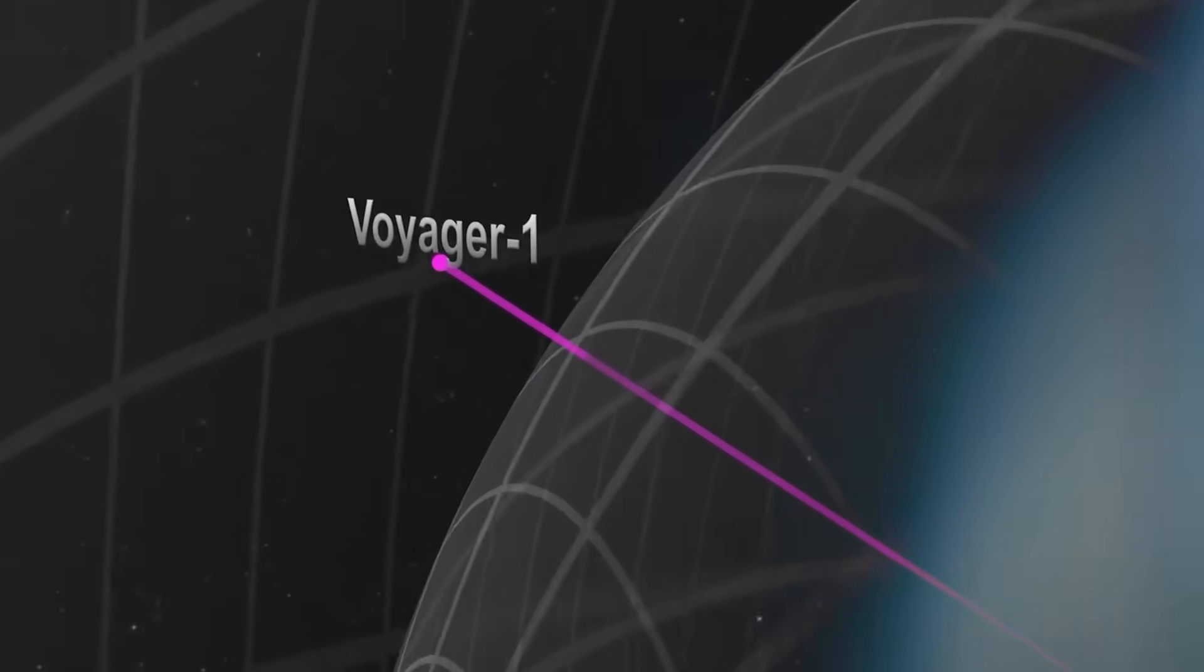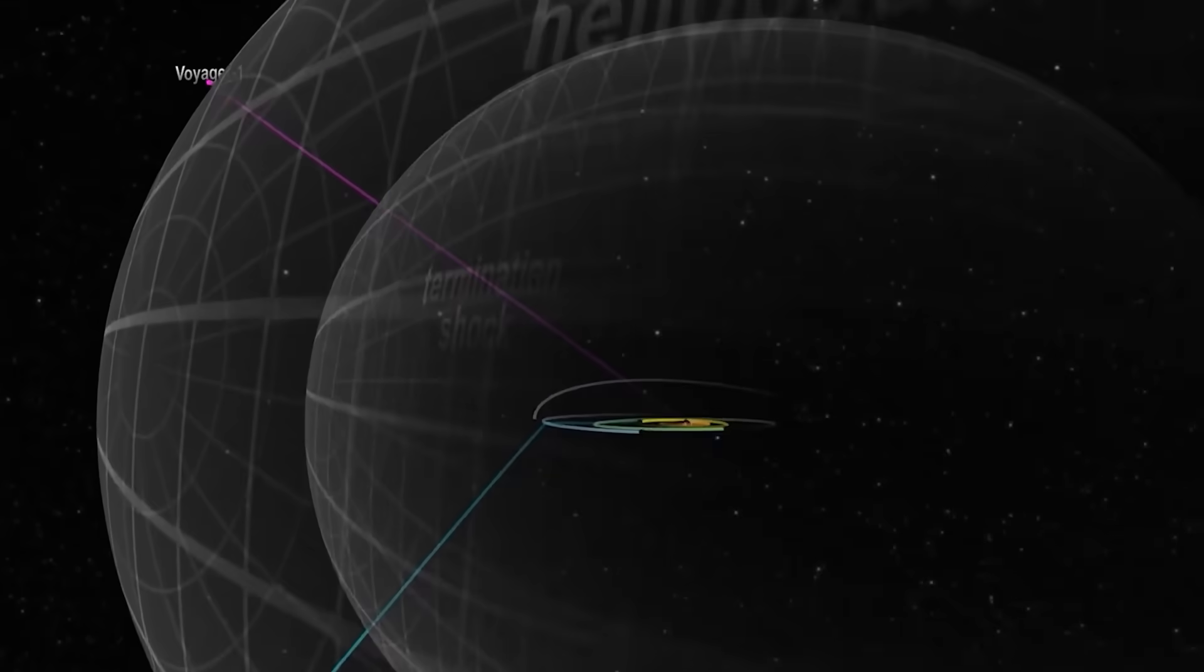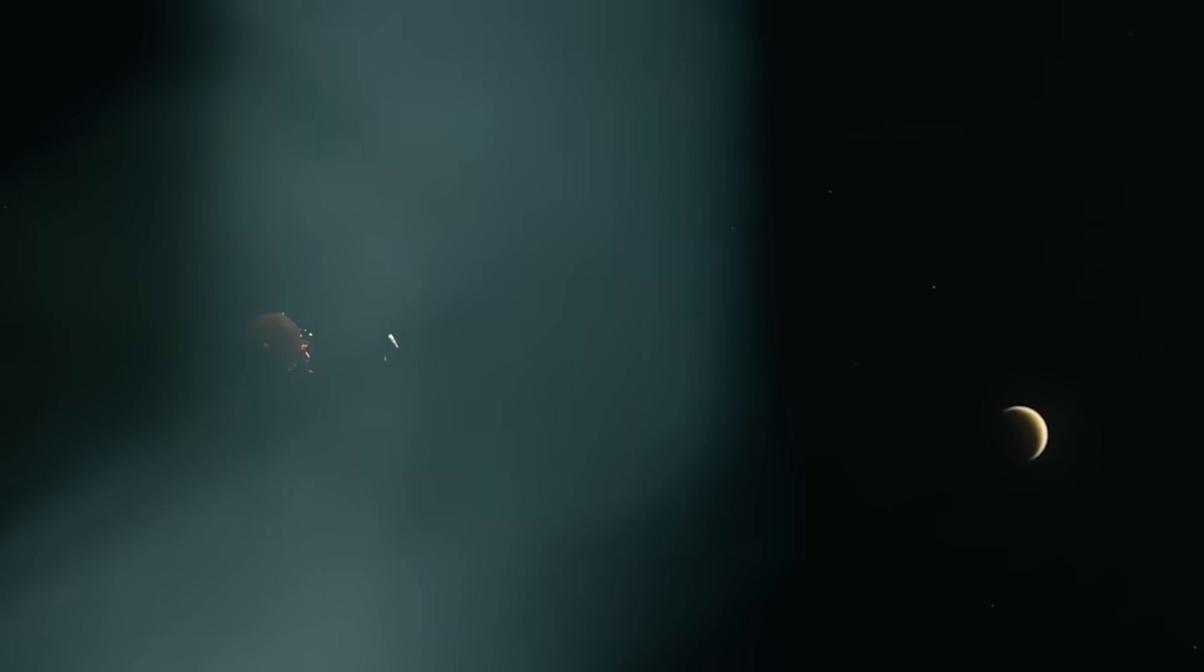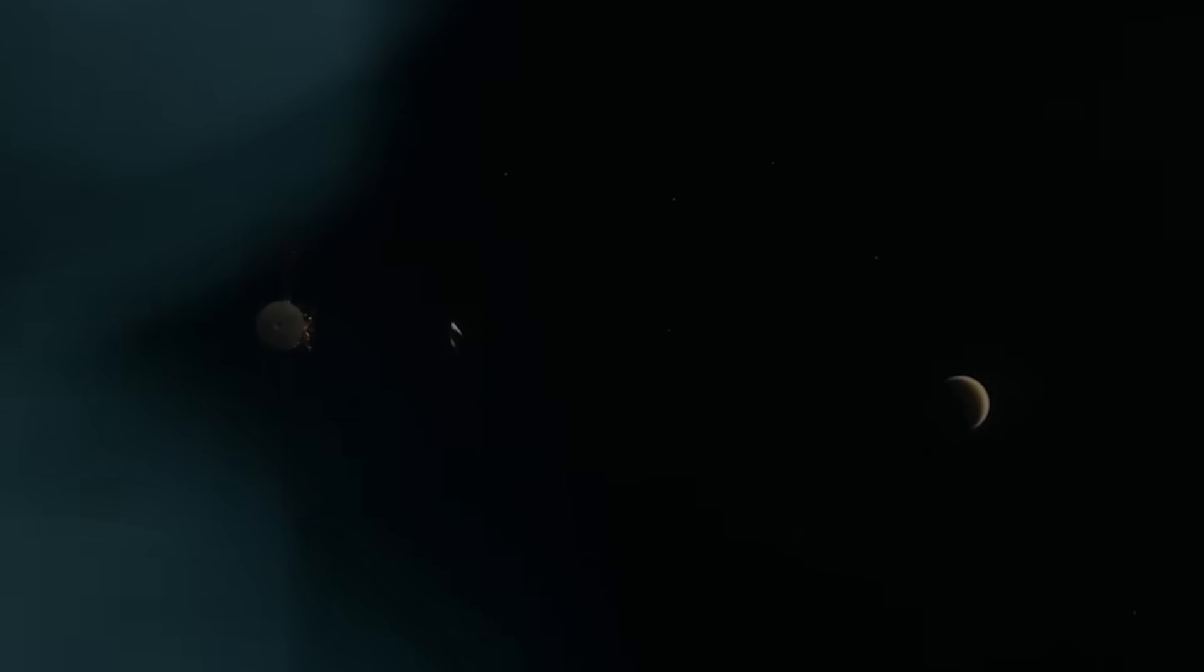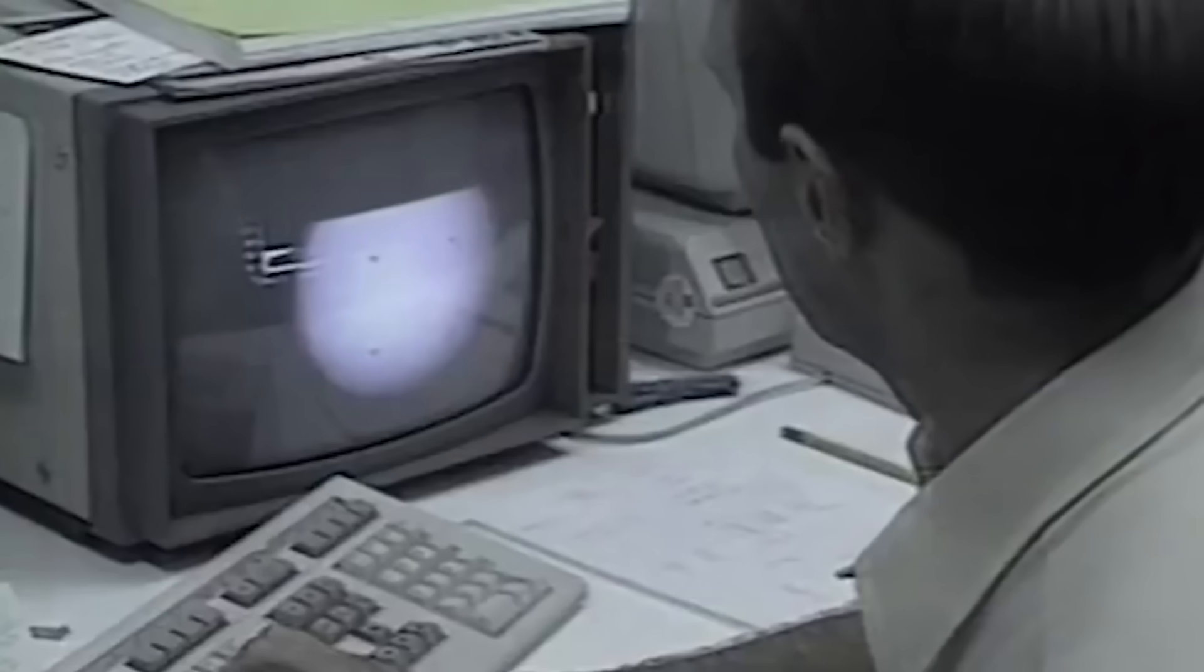When NASA sent the command to reactivate Voyager's long-dead camera system, a Hail Mary attempt to see what lay ahead, they expected silence. What they got was a response. The camera came online. Not just online, but functioning better than its specs allowed. And it didn't send a photo. It sent a spiral.